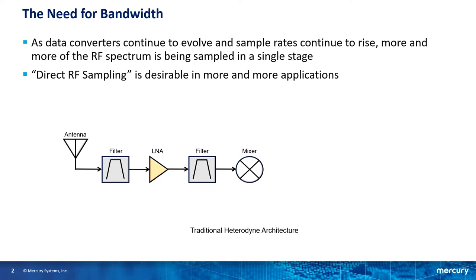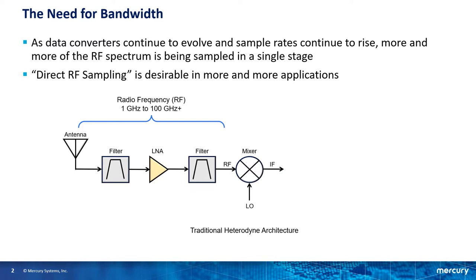And what frequency signals are we talking about receiving? It could be a wide range depending on the components we're using, but in this example I'm going from 1 GHz to 100 GHz — and it could easily go to 200 or 300 GHz. The RF signal is fed into the mixer, and at the same time a local oscillator feeds a sine wave into the mixer. The two signals are combined and the resulting difference signal is the intermediate frequency, or the IF.